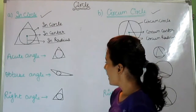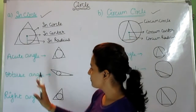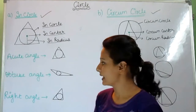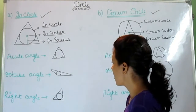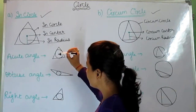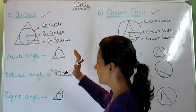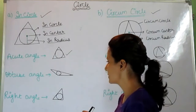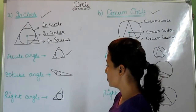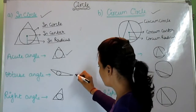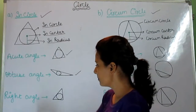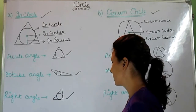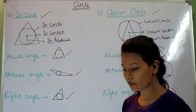Now we have three angles: acute angle, obtuse angle, and right angle. If we draw an incircle with an acute angle, the shape will be this. In an obtuse angle, this will be the shape. And in a right angle, this will be the shape.